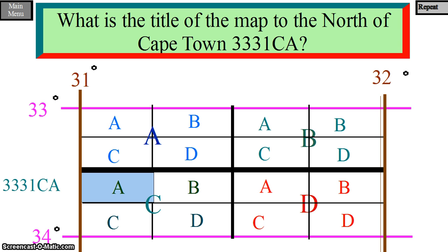The map title to the north of this map will be 3331CA, which is the purple shaded area.